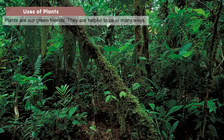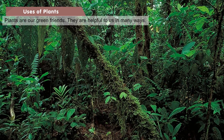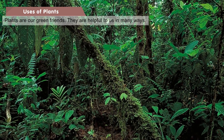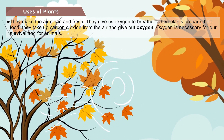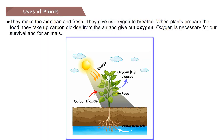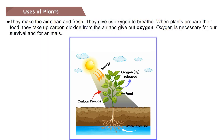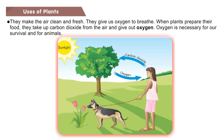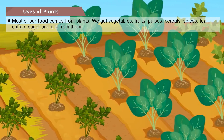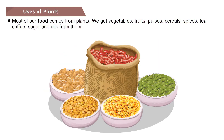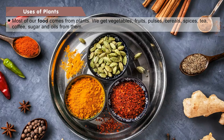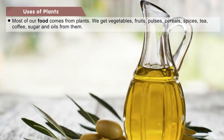Uses of plants: Plants are our green friends and are helpful to us in many ways. They make the air clean and fresh and give us oxygen to breathe. When plants prepare their food, they take up carbon dioxide from the air and give out oxygen. Oxygen is necessary for our survival and for animals. Most of our food comes from plants. We get vegetables, fruits, pulses, cereals, spices, tea, coffee, sugar and oils from them.